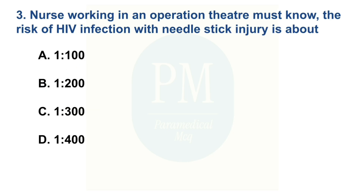A nurse working in an operation theater must know: the risk of HIV infection with needle stick injury is about. Option A: 1 in 100. Option B: 1 in 200. Option C: 1 in 300. Option D: 1 in 400. The correct option is Option C — 1 in 300.